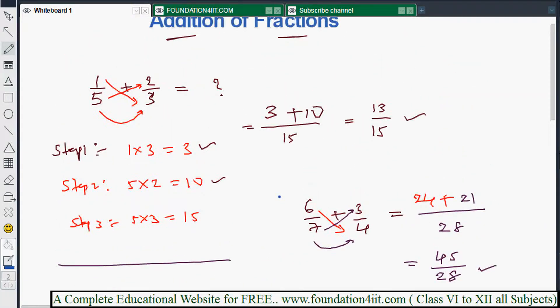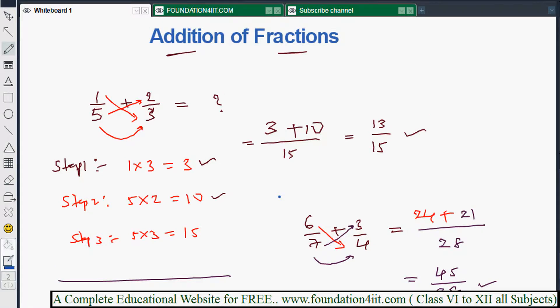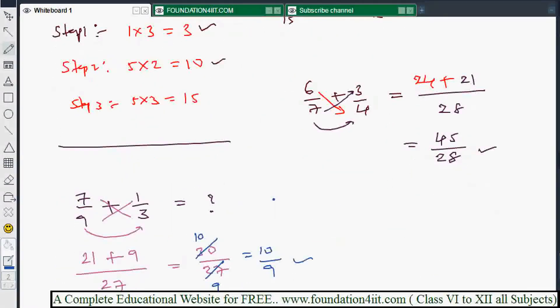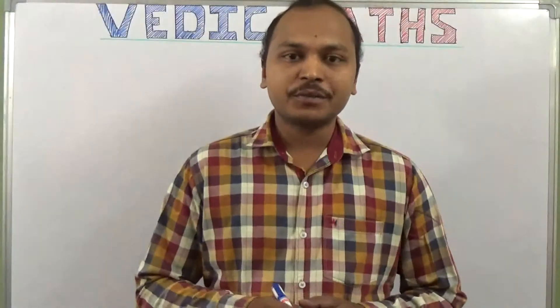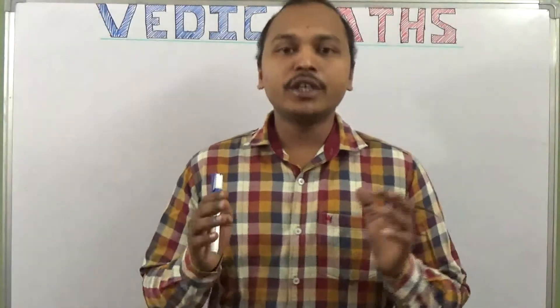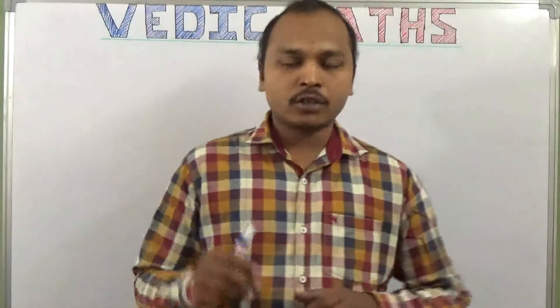This way we can do addition whenever two fractions we need to add. If three fractions, first two we can add then that answer we can add the third one. So instead of taking lengthy LCM process when the numbers are small, we can apply this method. Thank you for watching this video.